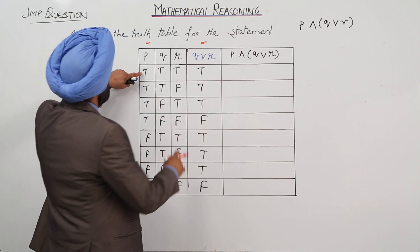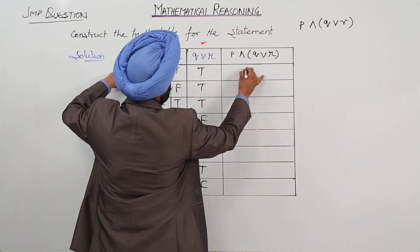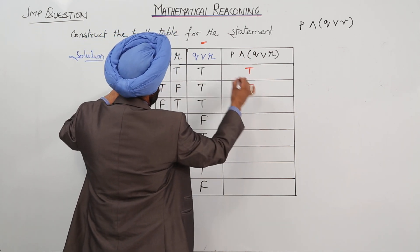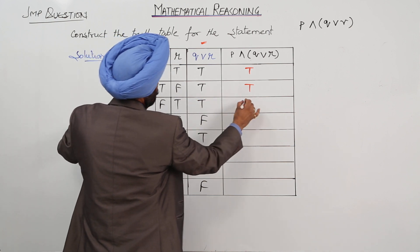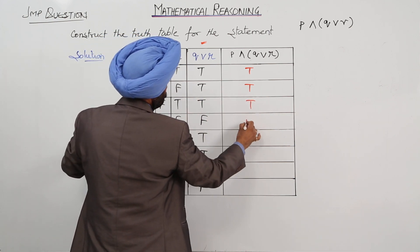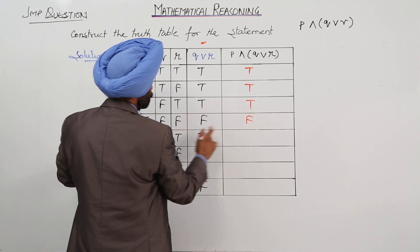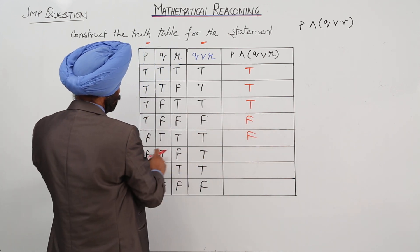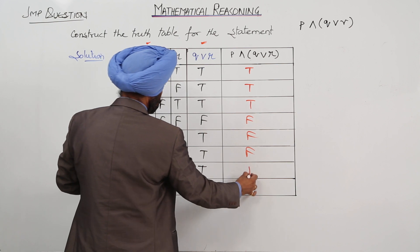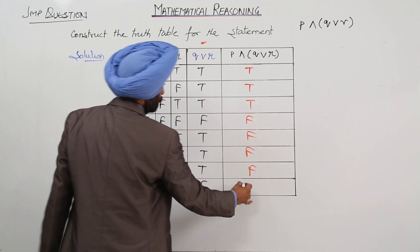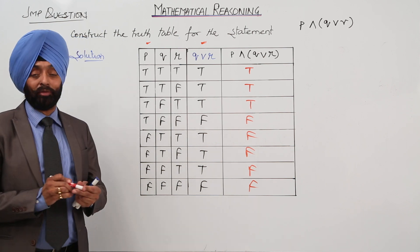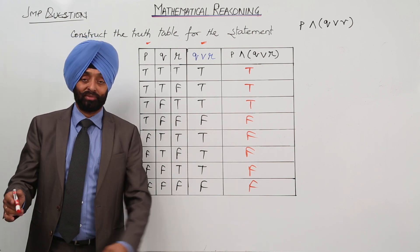Now applying AND: T and T is true, again T and T is true, again T and T is true. Then true and false is false, false and true is false, false and true is false, false and true is false, false and false is false. Like this, when we are having three statements, we can complete the truth table.